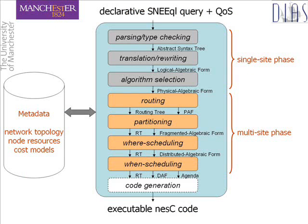The query stack we present is an extension of the classical two-phase optimisation approach from distributed query processing. It is composed of a single-site phase comprising the first three steps in grey boxes and a subsequent multi-site phase comprising the next four steps in which a distributed query plan is generated. The steps in the single-site phase are similar to those in distributed query processing and are not the focus of our research. However, the multi-site phase has been adapted.